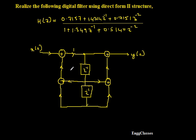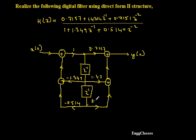Now I need to write the multiplier coefficients. This is 1, and for the denominator terms I change the sign: this becomes minus 1.349, and this turns out to be minus 0.514. Be careful — the sign of these two denominator terms changes when moved to the right-hand side. On the numerator side, nothing changes: this gets multiplied with 0.7157, here it gets multiplied with 1.43, and here with 0.715.